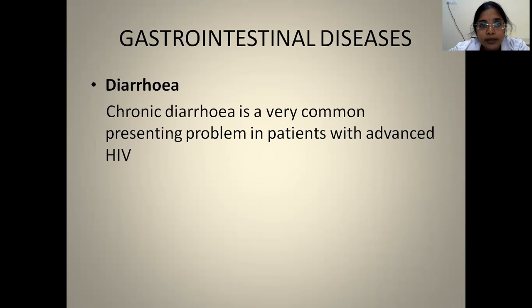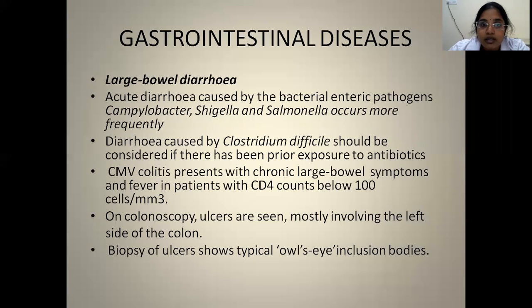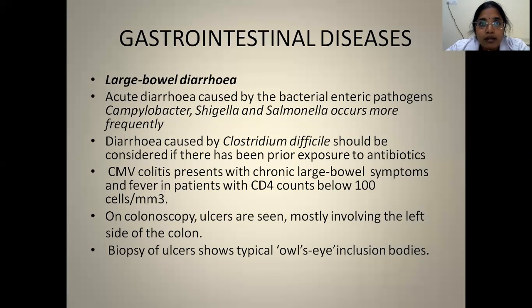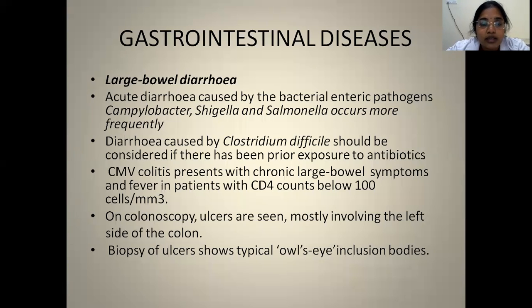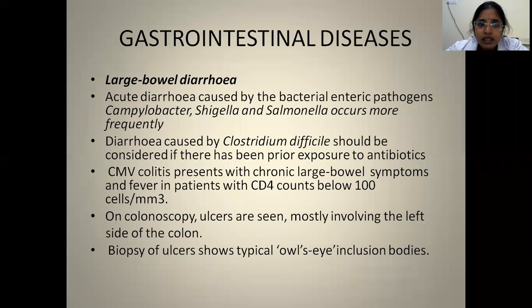Diarrhea is a very common presenting problem in advanced HIV, associated with severe dehydration and HIV wasting syndrome. Patients can present with either large bowel or small bowel diarrhea. Large bowel diarrhea: the quantity of stool is less but frequency is more — more than 5 times per day — with blood and mucus in stools. Small bowel diarrhea: patient passes large amounts but frequency is comparatively less, around 3 to 5 times per day, with no blood or mucus, or if blood, it is altered. Causative organisms for large bowel diarrhea include Shigella, Salmonella, and Campylobacter. If the patient has history of antibiotic usage, think of Clostridium difficile.